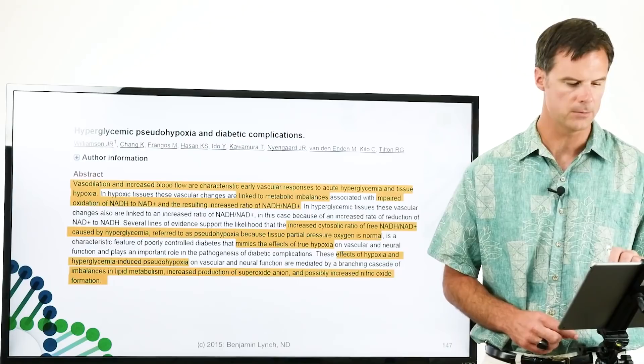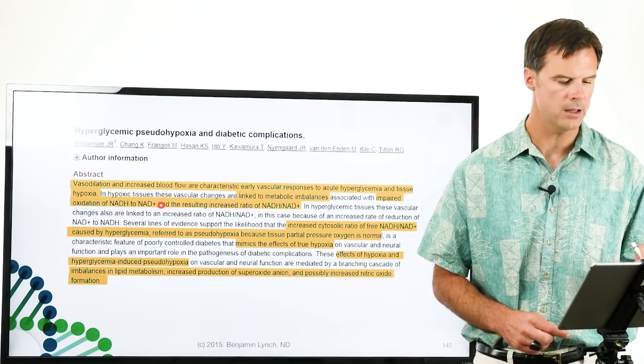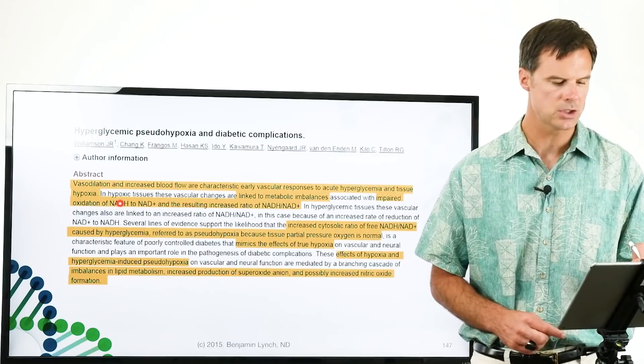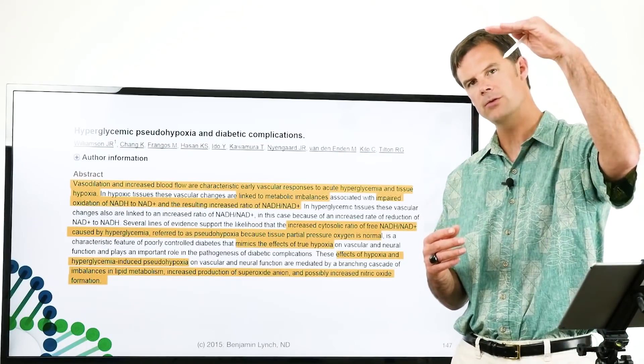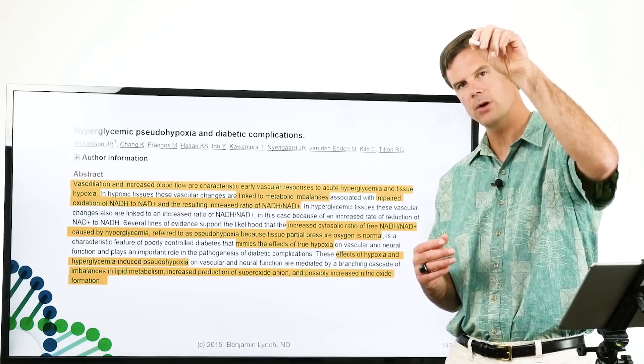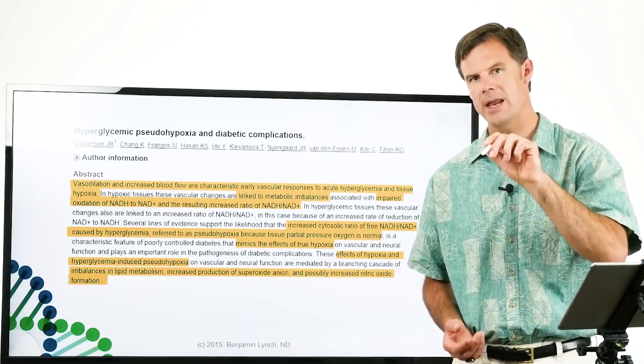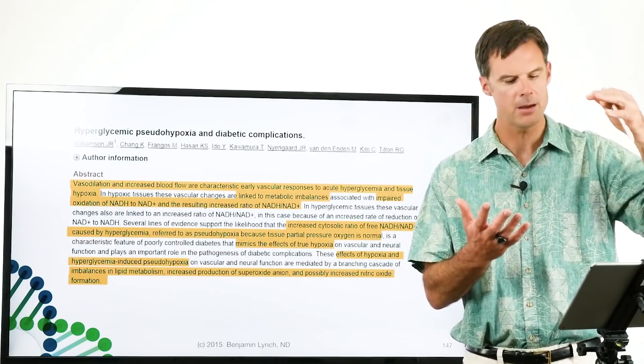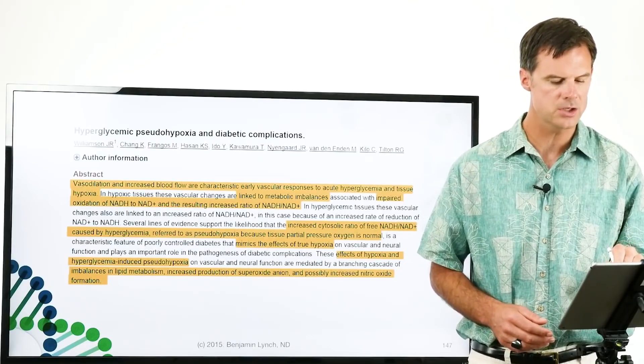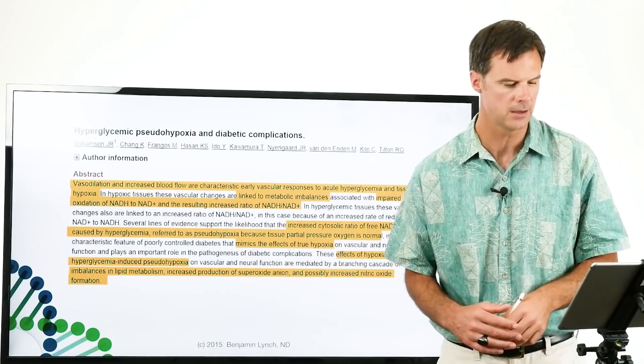But here's what I want to point out. Diabetics have an imbalance between NADH and NAD. Remember NADH, you have your glucose and I showed you that pathway of glucose and that whole cycle of how it makes NADH. Glucose makes all this NADH. Diabetics have a lot of NADH. They have tons of it and they're not being able to burn it.